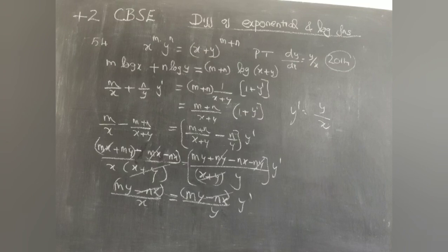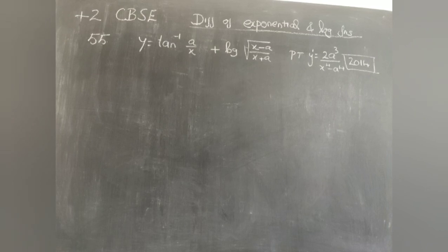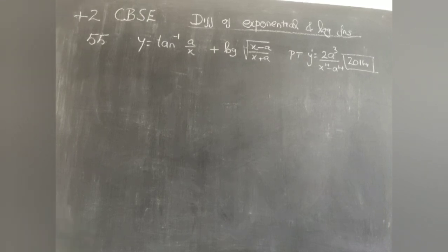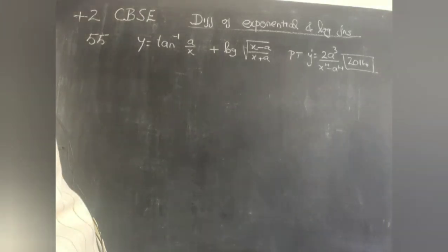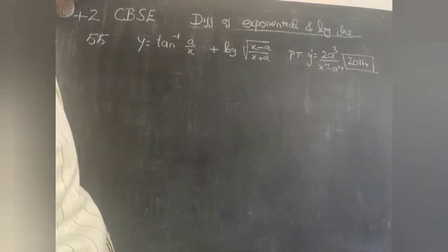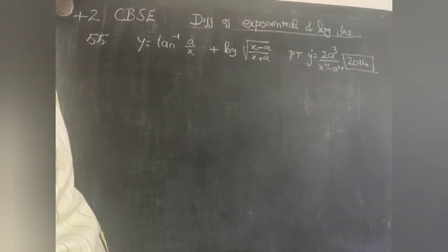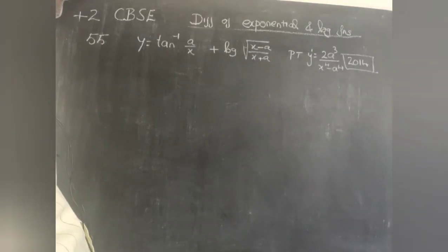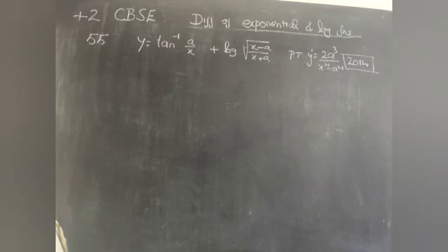If these problems are up to your expectation, please subscribe, like, and share with your friends. Now question number 55: y = tan⁻¹(a/x) + log√((x-a)/(x+a)). Prove that dy/dx = 2a³/(x⁴ - a⁴).